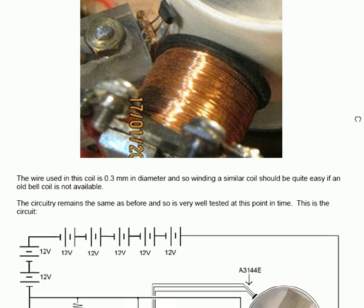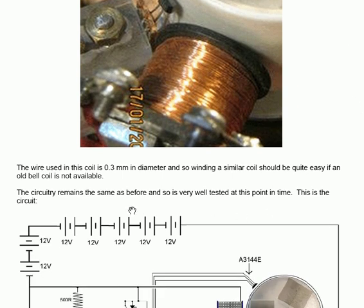The arrangement is very neat and very tiny and extremely small. The wire used in this particular bell coil is 0.3mm in diameter of enameled copper wire and so winding a similar coil should be quite easy if an old bell coil is not available.